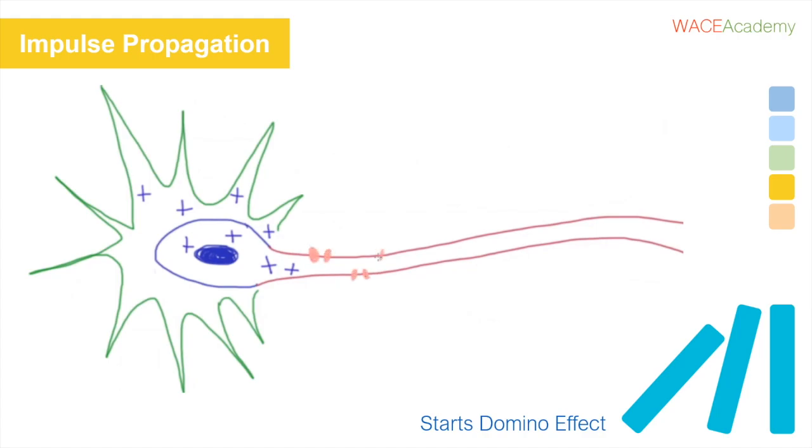These channels are called voltage-gated because they only open when a certain voltage is reached. Positively charged sodium ions come rushing in, which changes the voltage to trigger the next channels along to open. This is where the dominoes start.